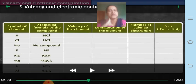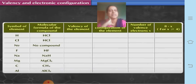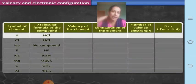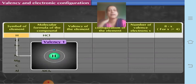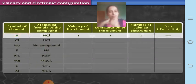Let us see the different examples relating valency to valence electrons, starting with hydrochloric acid. The valency of hydrogen is 1, its electronic configuration has 1 electron in the outermost shell, and the number of valence electrons is also 1. So its valency is 1.